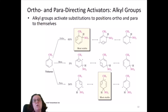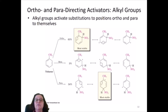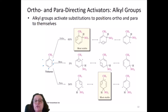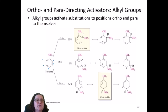Now, ortho, para, or meta directing: when you have a substituent in your benzene ring and you add a second substituent, where will it go? Will it go in an ortho position, a meta position, or a para position? That will depend on the carbocation you form and whether that substituent is going to donate charge — stabilizing the carbocation — or withdraw charge, which means it will destabilize that intermediate. For example, alkyl groups activate the ortho and para positions.